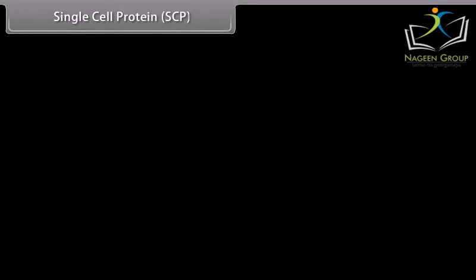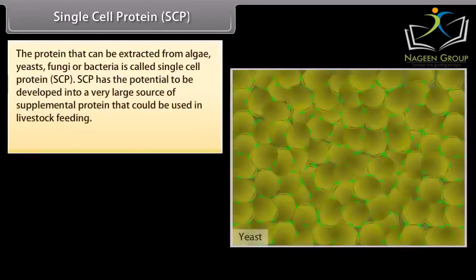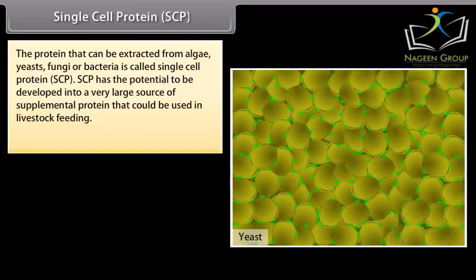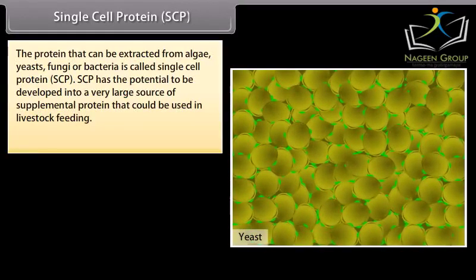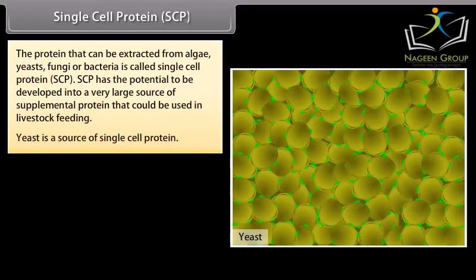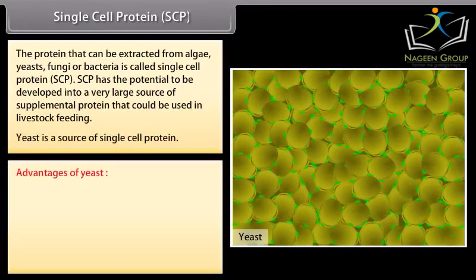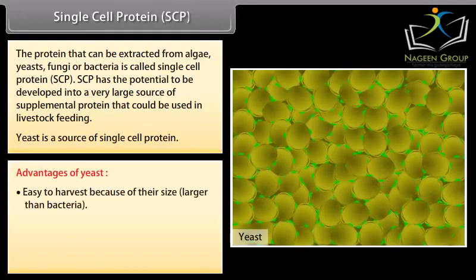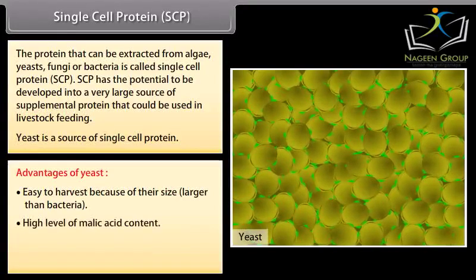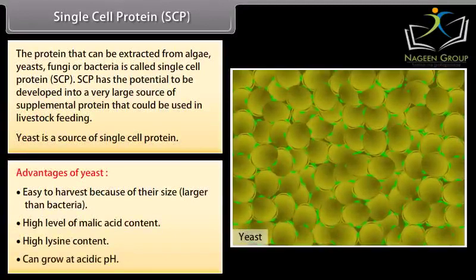Single cell protein (SCP) is the protein that can be extracted from algae, yeasts, fungi, or bacteria. SCP has the potential to be developed into a very large source of supplemental protein for livestock feeding. Yeast is a source of single cell protein. Advantages of yeast include easy harvesting due to larger size than bacteria, high malic acid content, high lysine content, and the ability to grow at acidic pH.